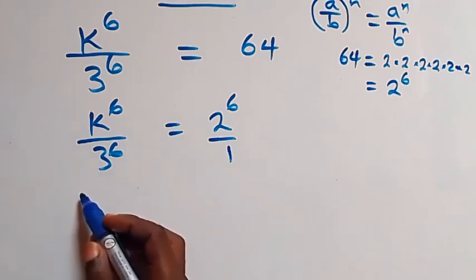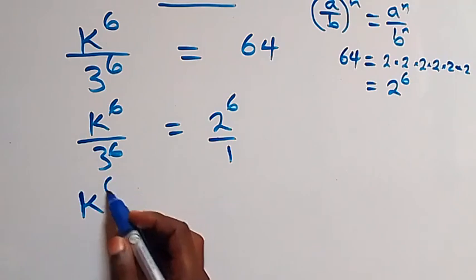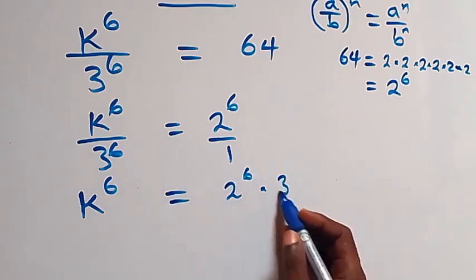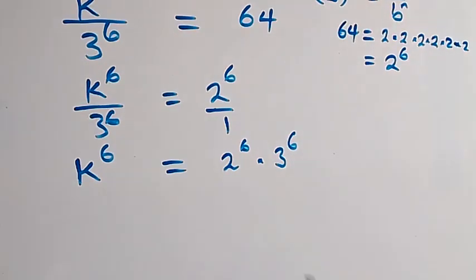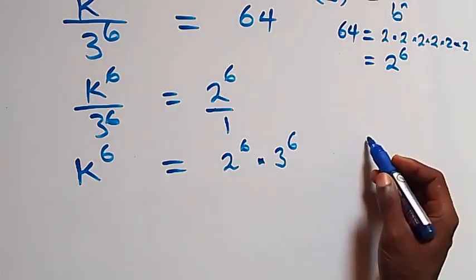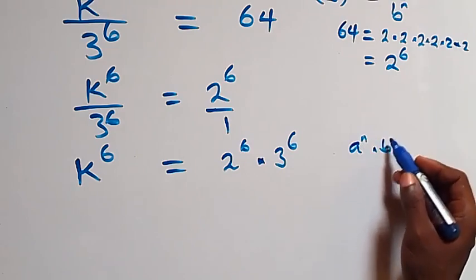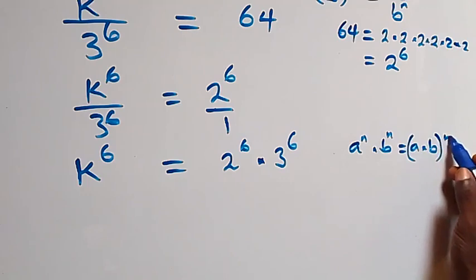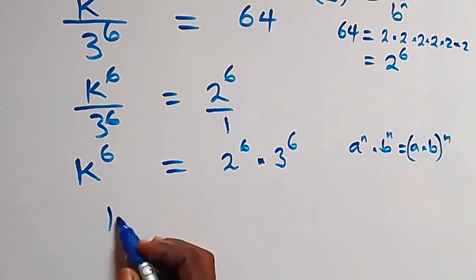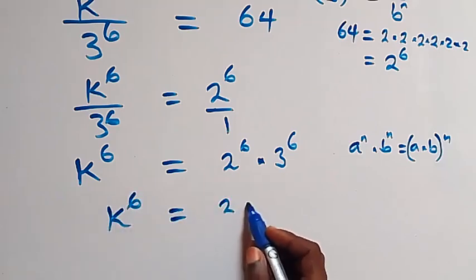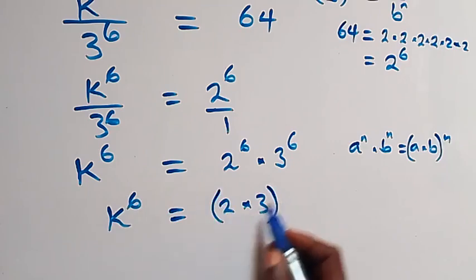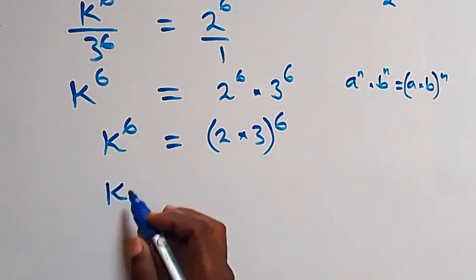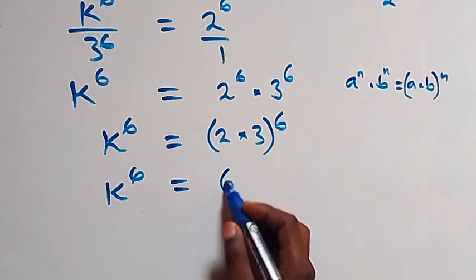Let's cross multiply. Here we have k raised to power 6 times 1, that is k raised to power 6, equals 2 raised to power 6 times 3 raised to power 6. Then from the law of indices, a raised to power n times b raised to power n equals (a times b) raised to power n. So here we have k raised to power 6 equals (2 times 3) raised to power 6.